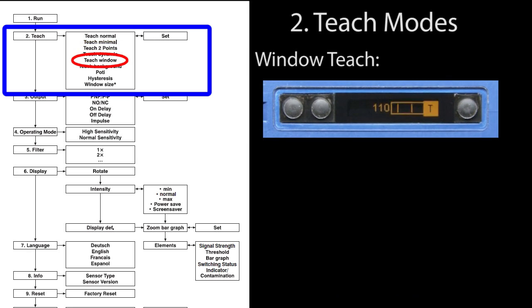In window teach, you put the object in front of the sensor and hit T1. If I move the object out of the way, you see two lines. Any object that passes between those two levels or within that window of values will be detected. Let's go back to run. If an object is too far away it won't be detected, and if it is too close it won't be detected. Only objects within the window will be detected.